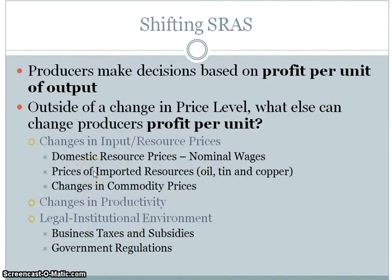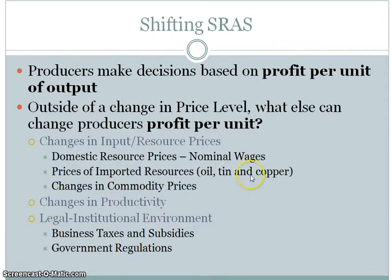Another change in input or resource price involves imported goods — things coming from other countries. Oil is a great example, since about two-thirds of our oil is imported. If it becomes more expensive to import these goods, that shifts the supply curve to the left. Also consider exchange rates: if the U.S. dollar appreciates, it allows U.S. firms to obtain more foreign currency, making resources from other countries cheaper. Importing more of those cheaper resources would decrease the short-run aggregate supply.